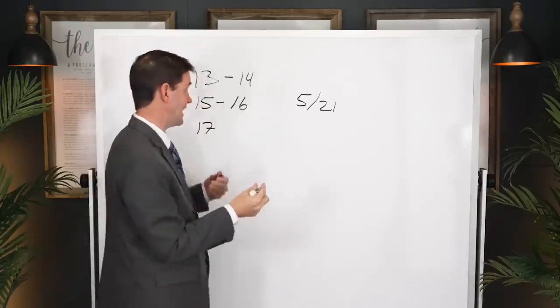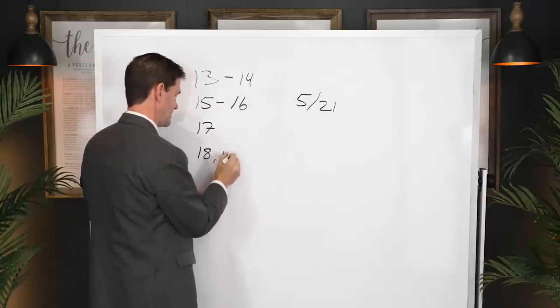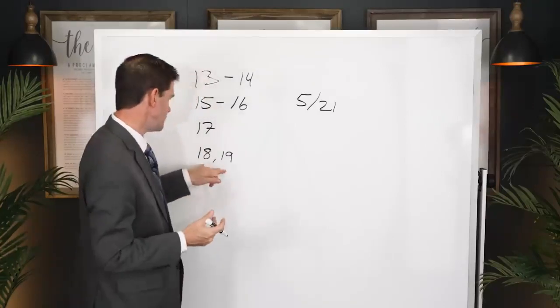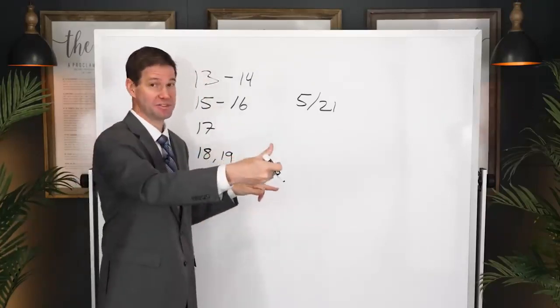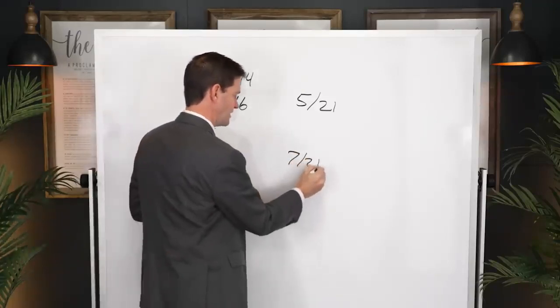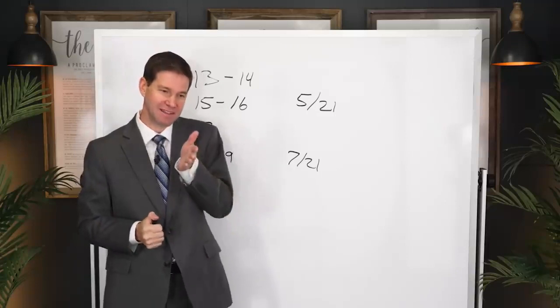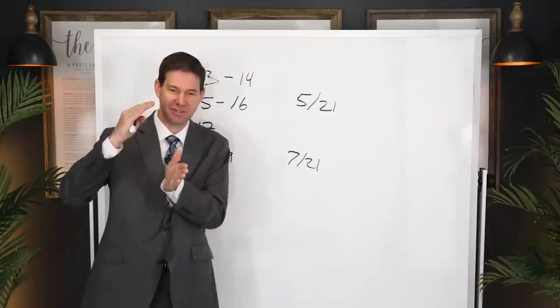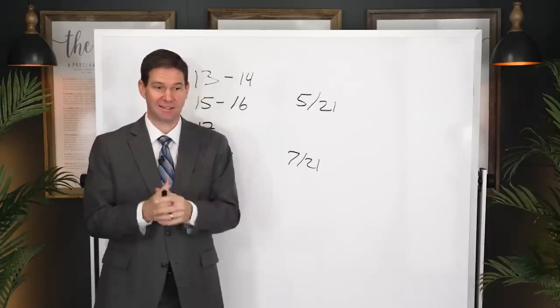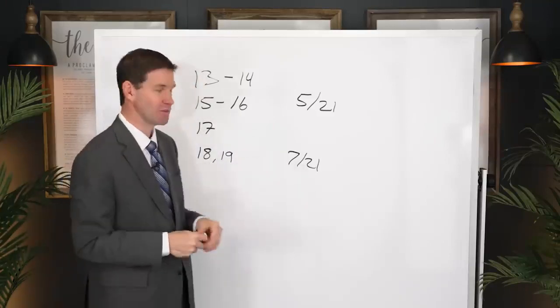And then, if you add chapter 18, which is John's account of Gethsemane, and 19, his account of the trials and the crucifixion of Christ, if you add that to the mix, you're adding a few more hours of time. Now you're at 7 out of 21 of John's chapters. That's one-third of the entire gospel of John taken up from the evening of Thursday when he goes into the Last Supper through early in the morning on Friday of the crucifixion, just over a 12-hour segment of Jesus's life, and we've got one-third of the time spent.